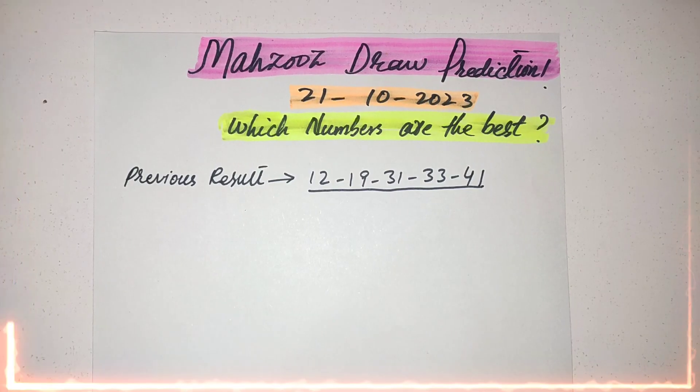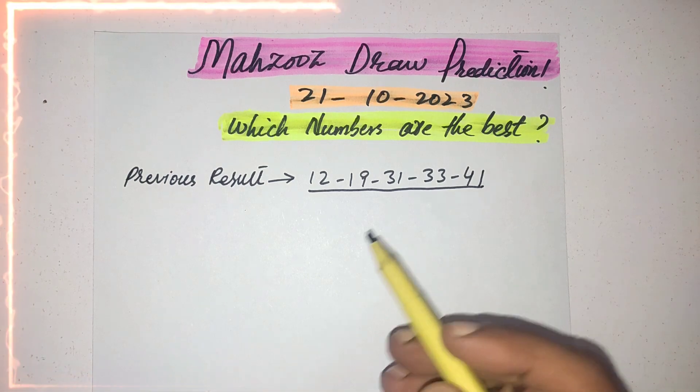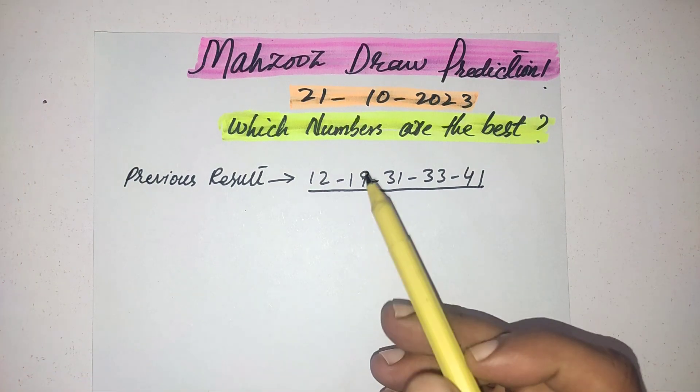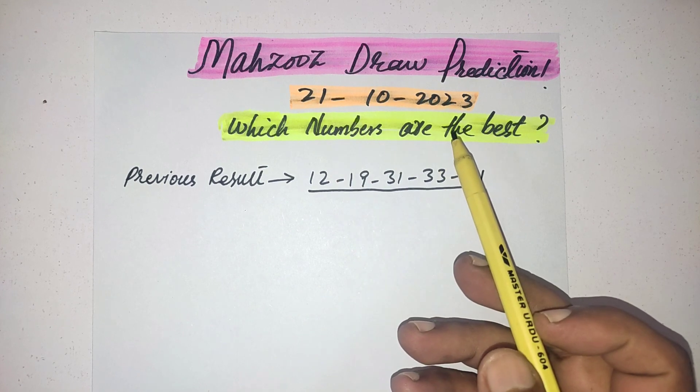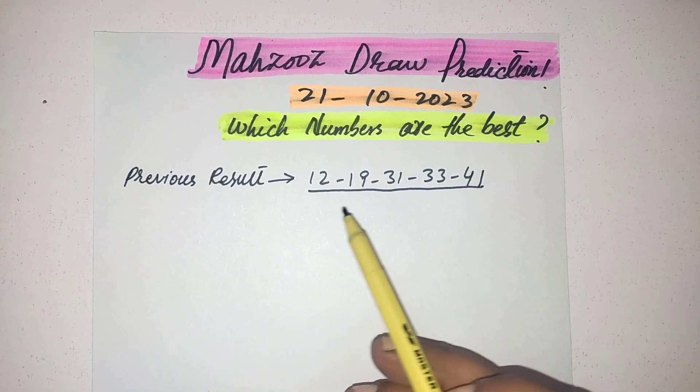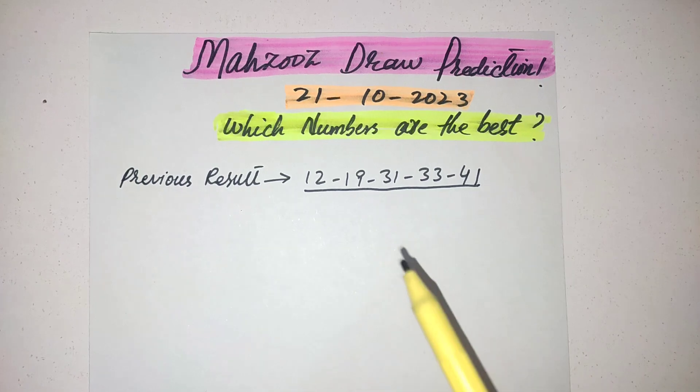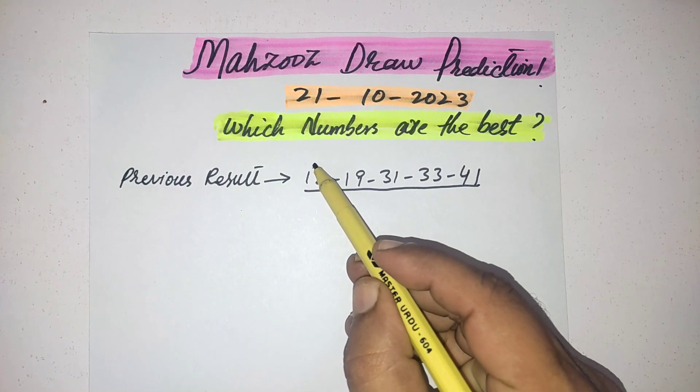Hi my friends, welcome to my YouTube channel Emirates Loto Winner. Today is the prediction for the Mahzooz upcoming draw which is drawing on 21st October 2023. This is the previous result of Mahzooz. Friends, whenever the 12 number came in the result in Mahzooz history, in maximum draws the 12 number was repeated.